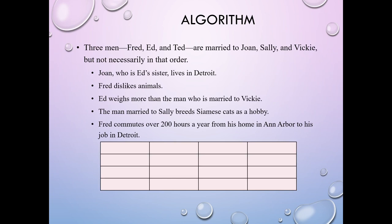You might just jump in and try another solution — sometimes with a simple one you might accidentally stumble on the correct answer. But algorithmically, you set up a grid with Fred, Ed, and Ted along the columns and Joan, Sally, and Vicky along the rows, then start marking off people who can't possibly be married to each other. Joan can't be married to Ed because she's his sister. Vicky can't be married to Ed because he weighs more than the man married to Vicky. That leaves Ed married to Sally.